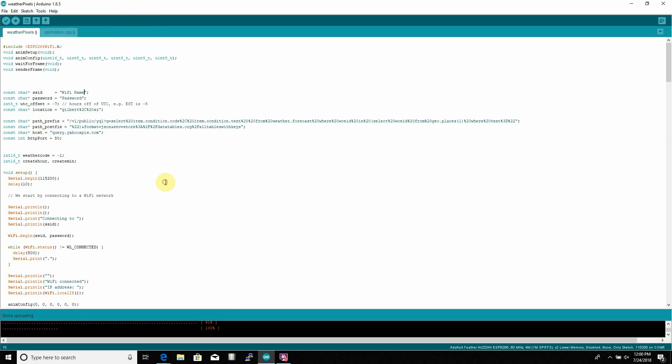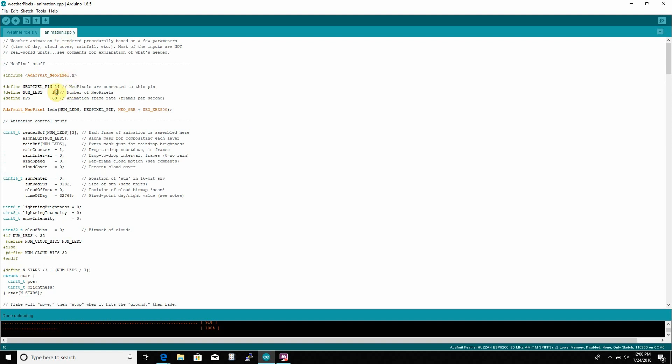Once that's done, we take the code that was given to us on GitHub and make a few changes to it. The first change is the number of NeoPixels in the ring. And our ring has 24 individual NeoPixels, so we'll have to change that. So find where it says number of NeoPixels and just plug in 24.